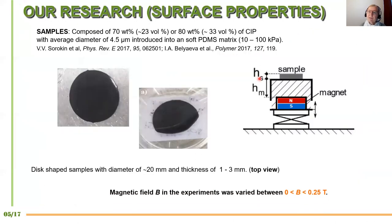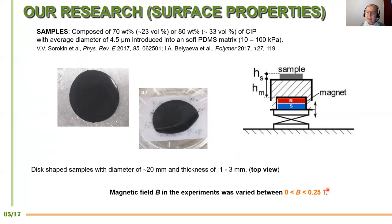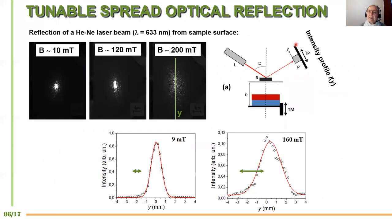We are using carbonyl iron in a PDMS matrix. The typical concentration is 70 to 88 percent of microparticles. The samples have a disc shape with a diameter of 20 millimeters and a thickness of a few millimeters. We apply the magnetic field by simply using a permanent magnet moved by a translation stage closer to or farther from the sample, allowing us to change the magnetic field between about zero and a quarter of a tesla.